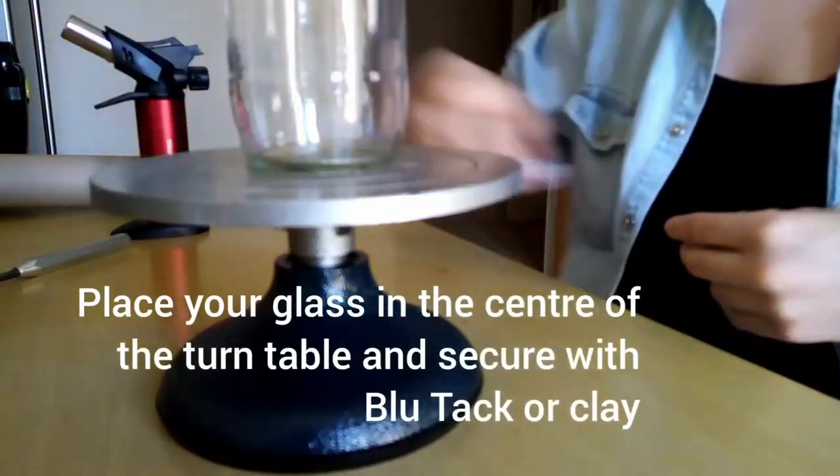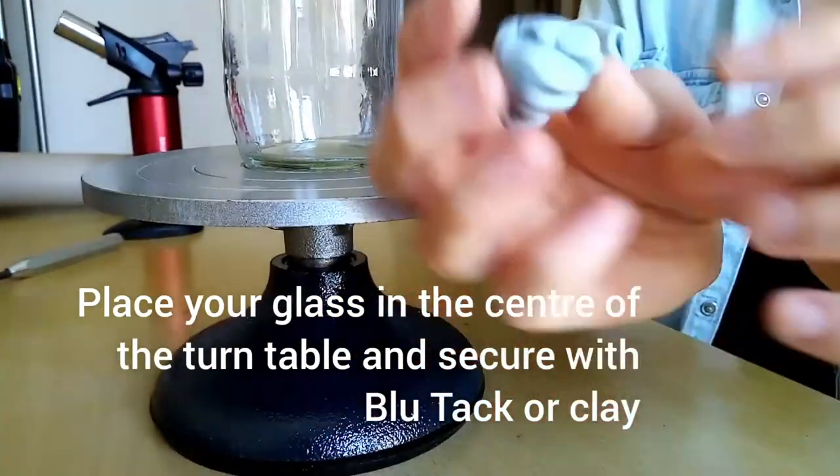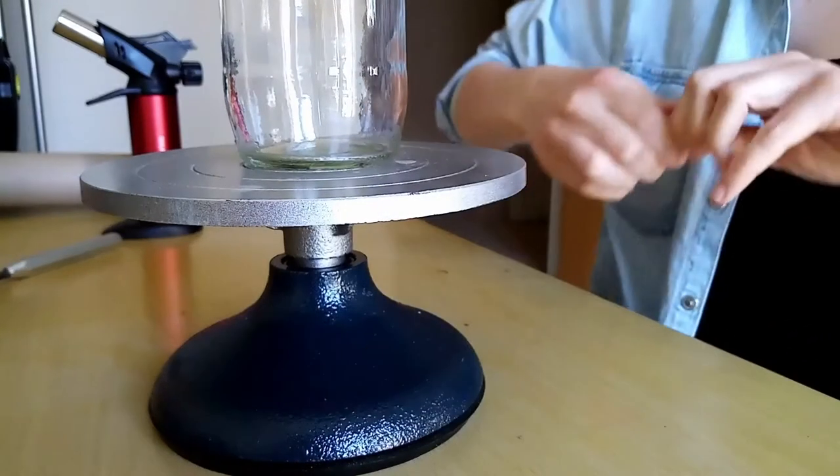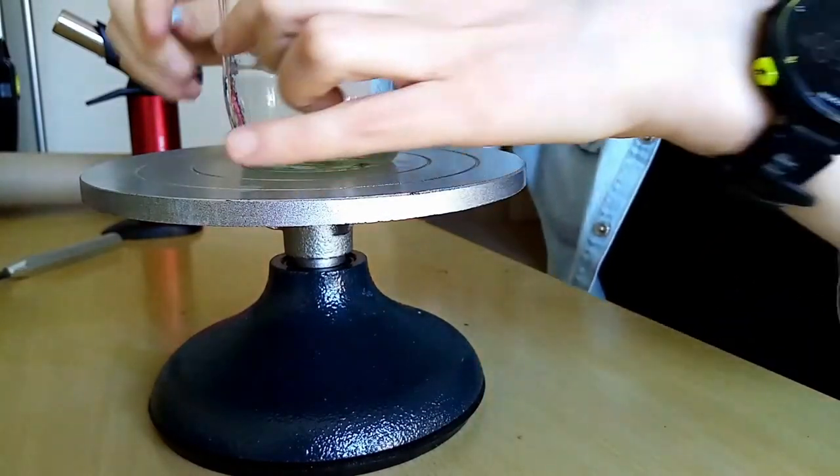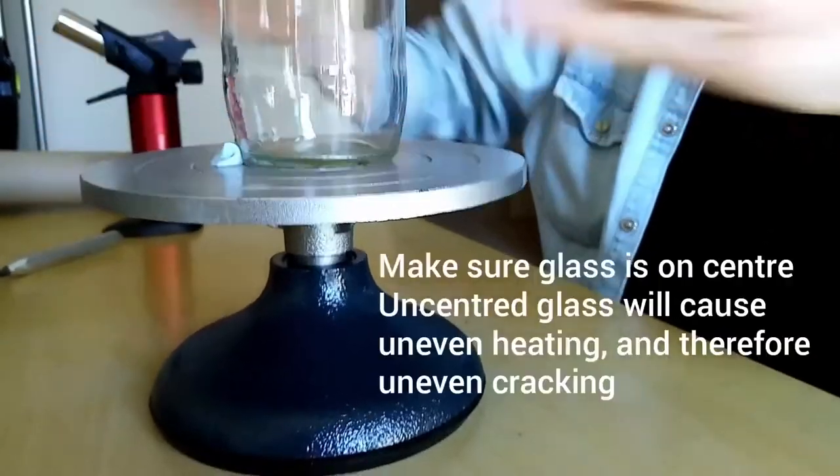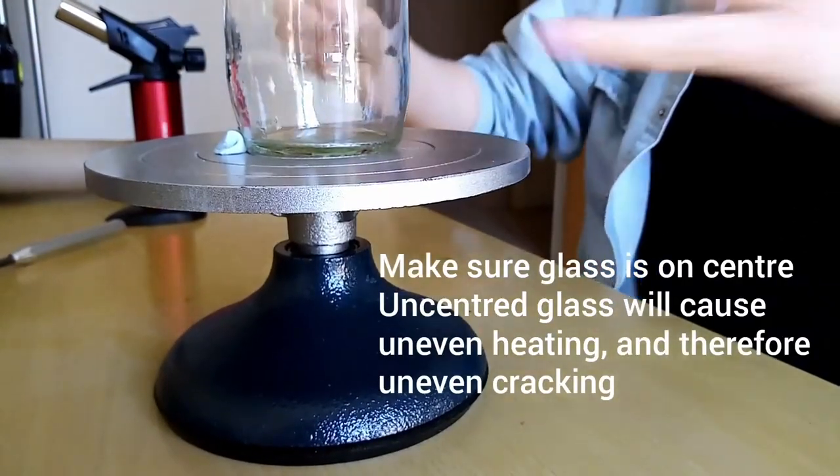Place it in the center of your turntable and use the blue tack or the clay to hold it in place. This is a really important step because when you're turning it, if there's any sort of movement your glass could fall off or go off center.